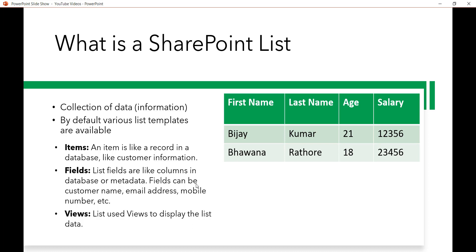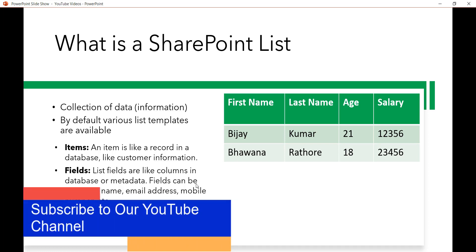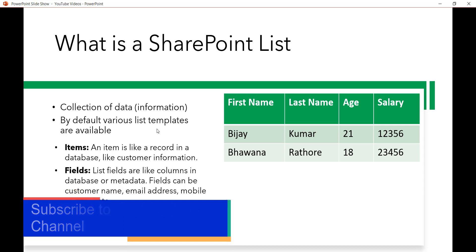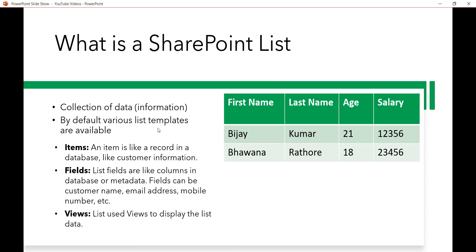In a SharePoint site, Microsoft provides various list templates which you can use to create a list. These templates have predefined columns. For example, there is a task list, calendar list, promoted links, discussion boards, issue tracking, contact list, announcement list, and survey list. If your business requirement isn't met by these predefined templates, you can always create a custom list and add custom columns to it.